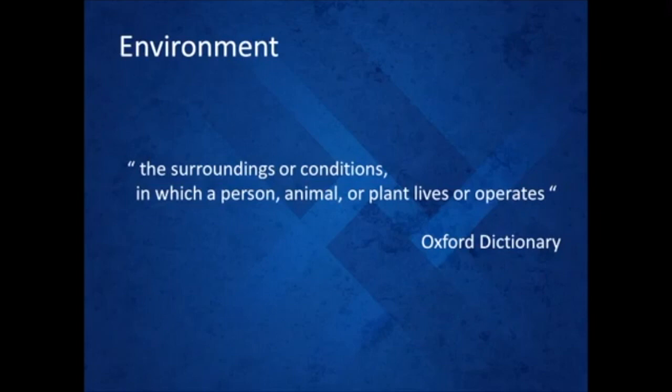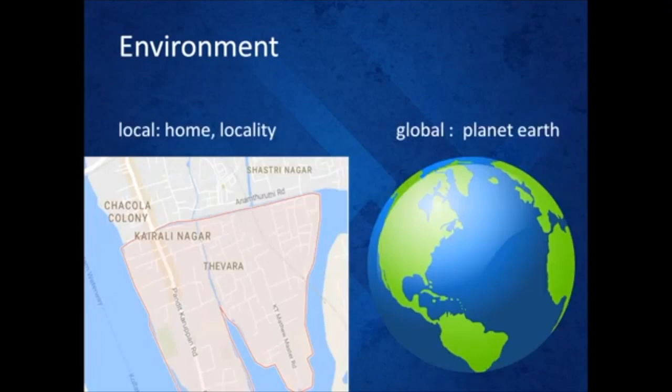On a local level, our home is our environment. The boundaries of the environment can be enlarged to include our locality, as shown on the left hand side of this slide. At the same time, on a global level, we can also say that planet earth is our environment.